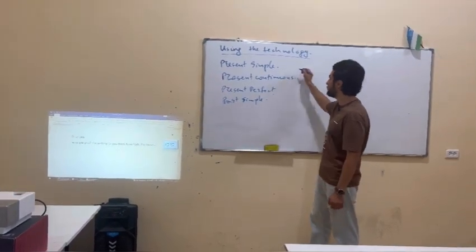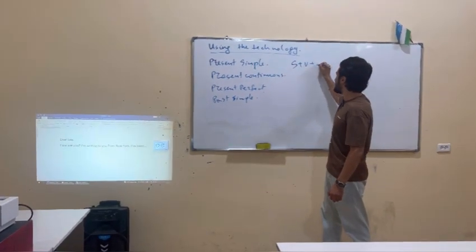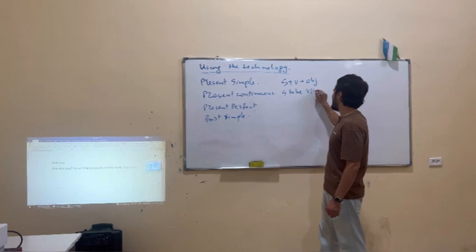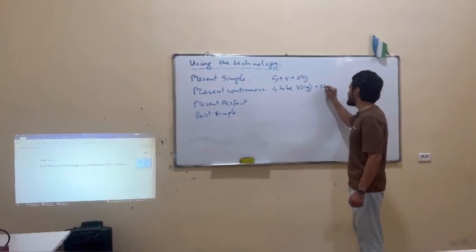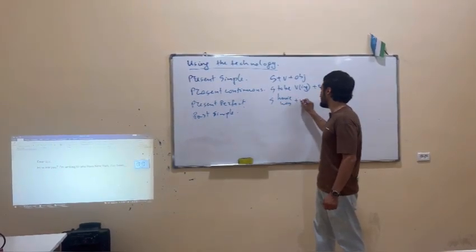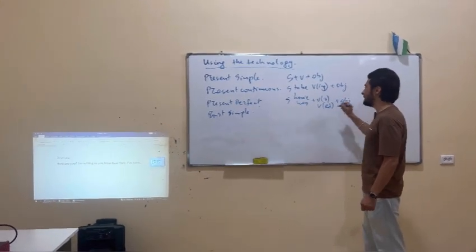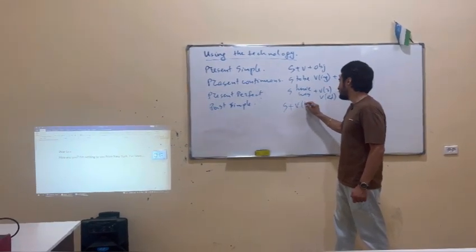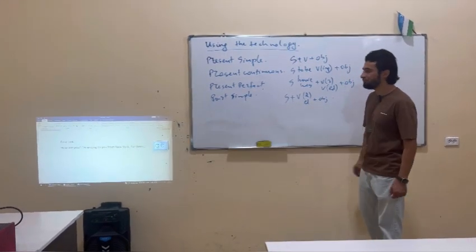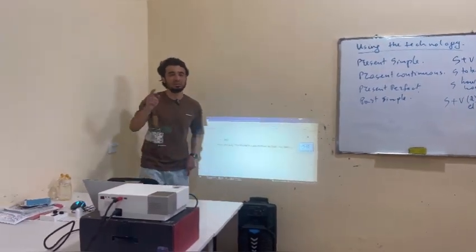First, present simple — subject plus verb plus object. Present continuous — subject plus to be plus verb-ing plus object. Present perfect — subject plus have/has plus verb from the third column; if it's a regular verb, plus -ed, plus object. And the last one, past simple — subject plus verb second column or plus -ed, plus object. Okay great, so let's start our activity.